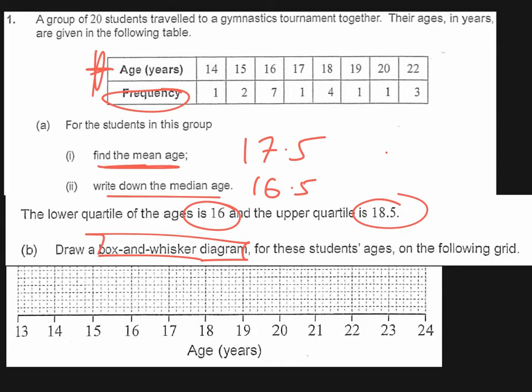Box and whisker plot. The box is going to be based around the median. So we found the median was 16.5, so that's here.